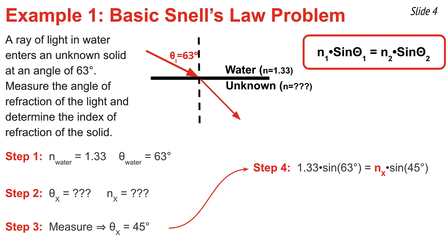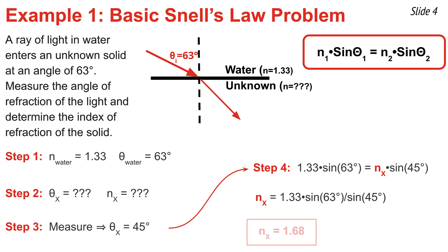I do my algebra by dividing both sides of the equation by the sine of 45 degrees. Then I use my calculator to calculate the index of refraction of material x: I multiply 1.33 times the sine of 63 degrees and then divide by the sine of 45 degrees. Make sure that your calculator's angle mode is set to degrees, and if you do, you'll get 1.68 as your final answer.